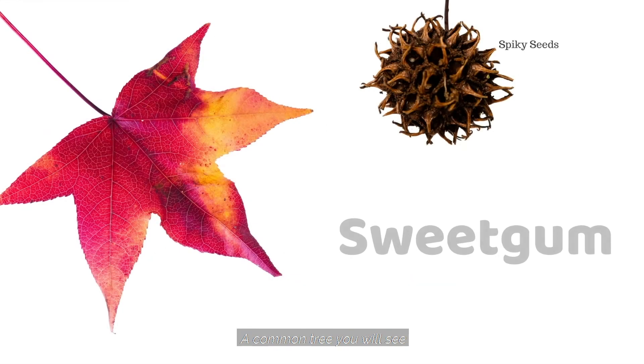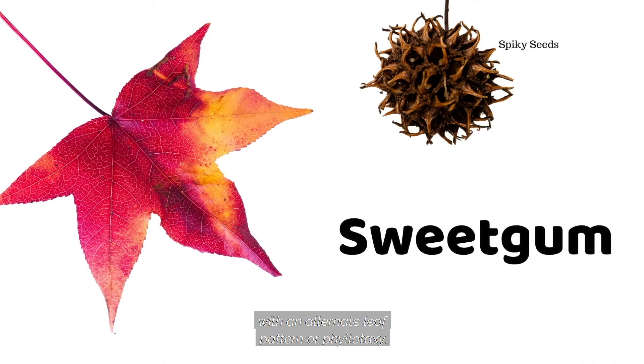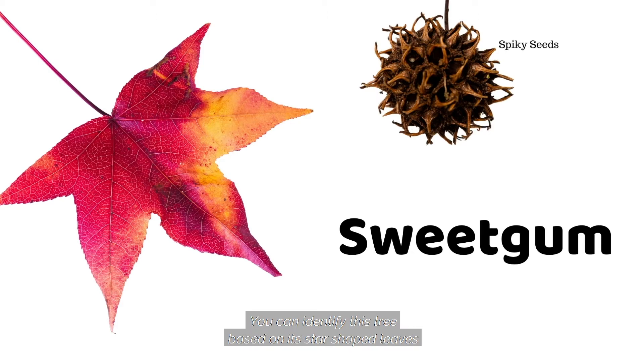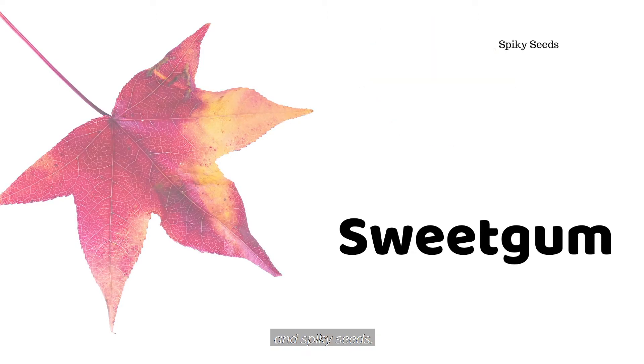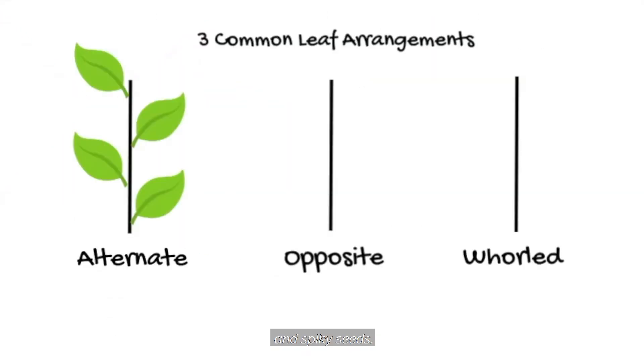A common tree you will see with an alternate leaf pattern or phyllotaxy is called a sweetgum. You can identify this tree based on its star-shaped leaves and spiky seeds.